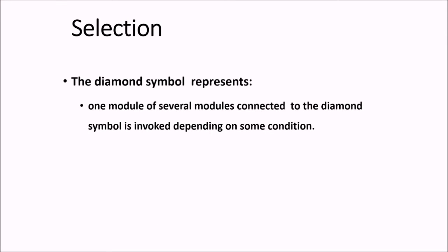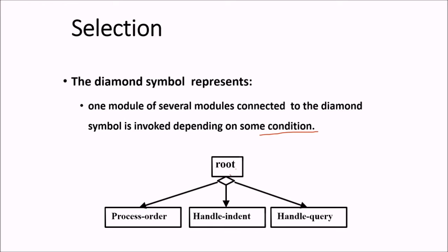Then selection. A diamond symbol. A diamond symbol is going to represent that one module of several modules connected to the diamond symbol is invoked depending on some condition. When you want something to happen or something not to happen with a result of some condition, then you use the selection. This form. Root. Now this will select whether this has to be given control, this one has to be transferred the control or this one has to be given the control.